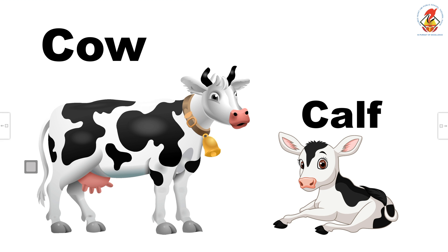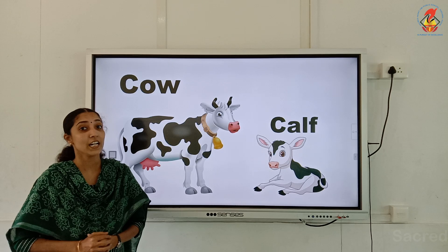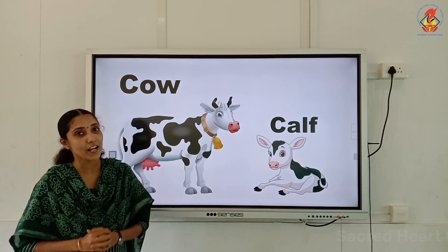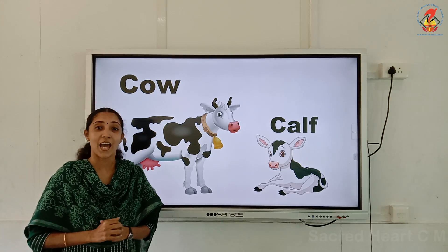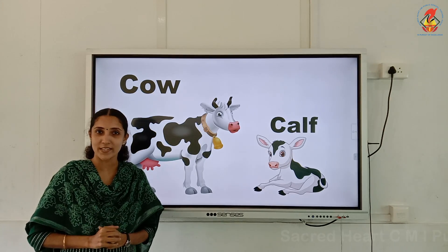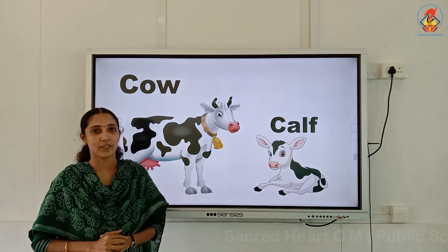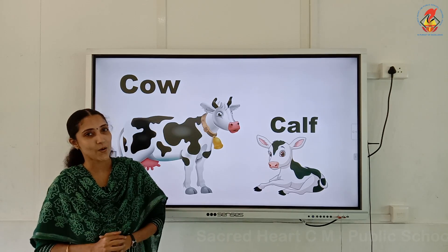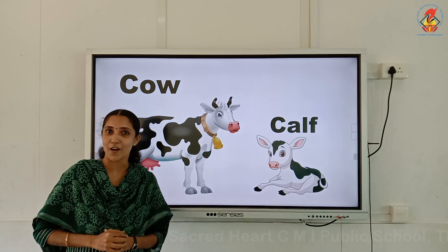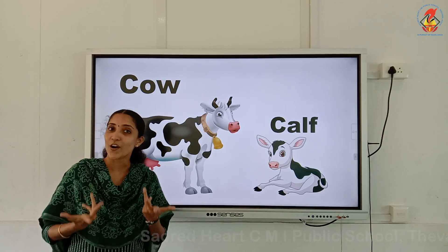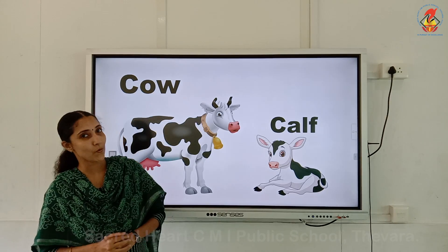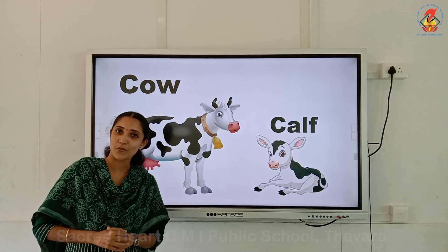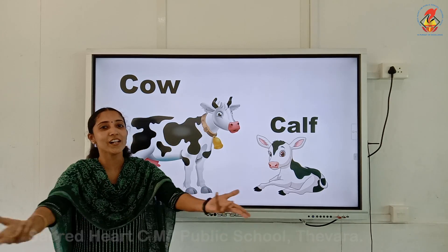Here you can see a picture of a cow. A cow is a domestic animal and the baby of a cow is called a calf. And what does the cow say? Moo moo! A cow has a calf — what does it say? Moo moo moo moo, all through the day.